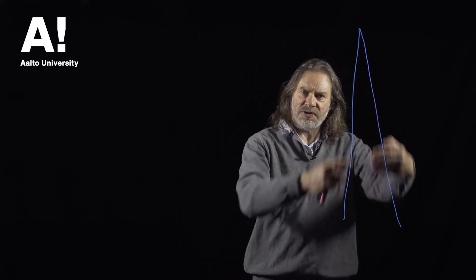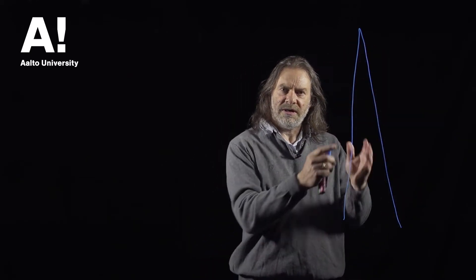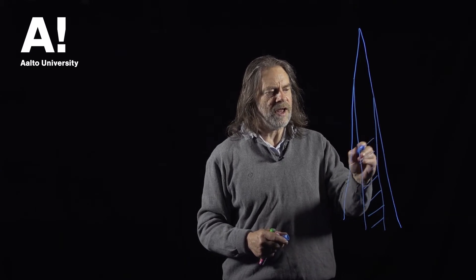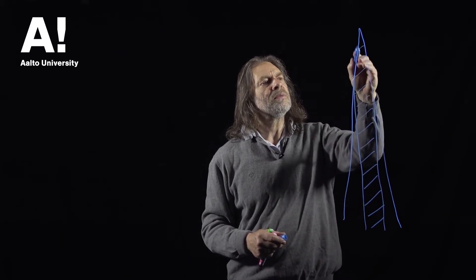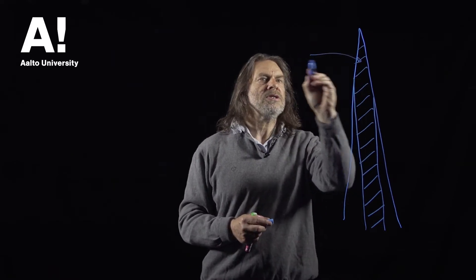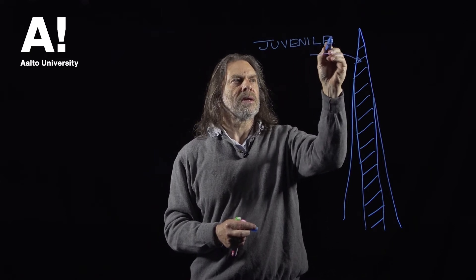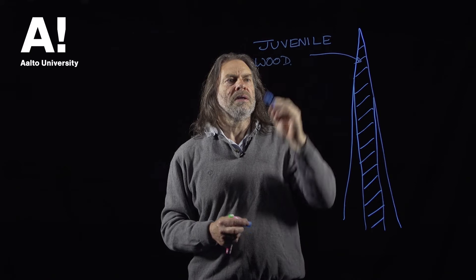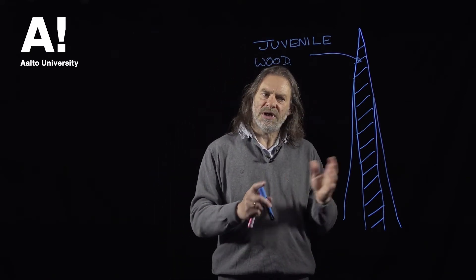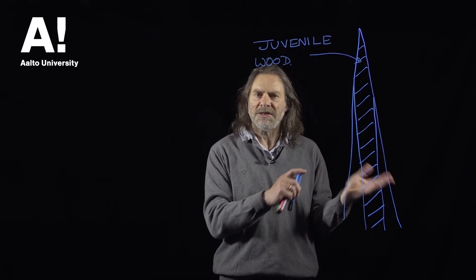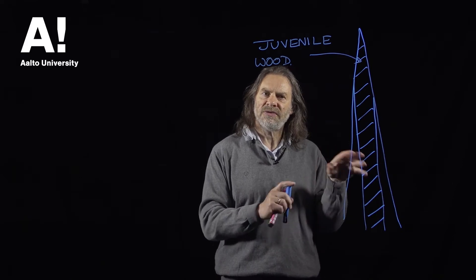If we take a section through the trunk of a tree, there are different types of wood that form in the tree. One of them is called juvenile wood, and this wood is more flexible than what's called mature wood. That is the juvenile wood and it has a number of features associated with it. It absorbs moisture in a different way and it has different mechanical properties.